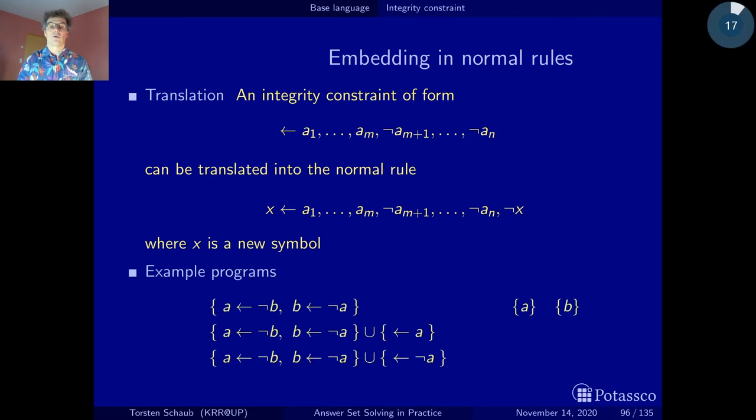Now let's look at this with our programs. In the first case we have no integrity constraint, hence we don't have to do a translation and we just get as before stable models a and b.